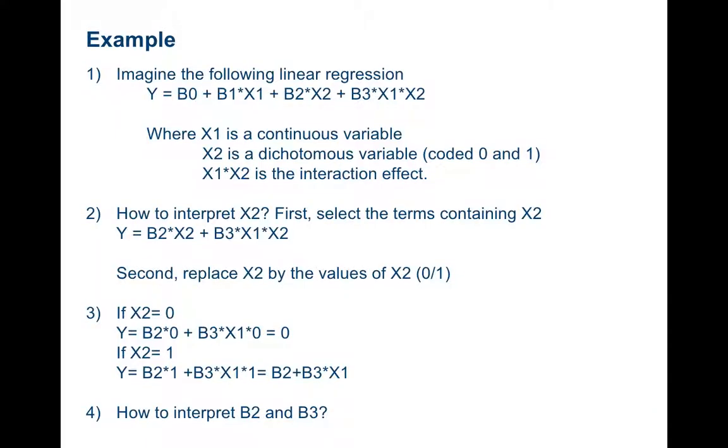If we take back the previous example, the interaction effect is between a continuous and a dichotomous variable, respectively X1 and X2. The main effect is characterized by the coefficient beta 1 and beta 2. The interaction effect, looking at the interaction between X1 and X2, is characterized by the coefficient beta 3.